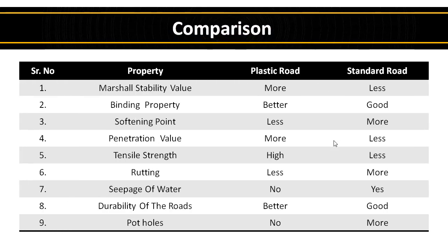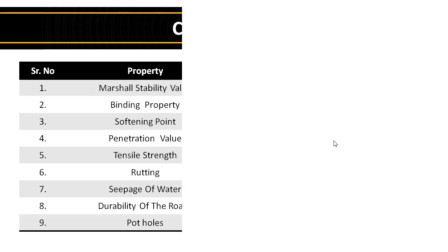Let's see the comparison of plastic roads with standard roads. The Marshall stability value of plastic road is more compared to standard road. The binding property is also better. The softening point is less. The penetration value is high, and the tensile strength is also high compared to standard road. Rutting is very less in plastic road. Seepage of water is near zero. The durability of the road is better, and no potholes occur in a plastic road.